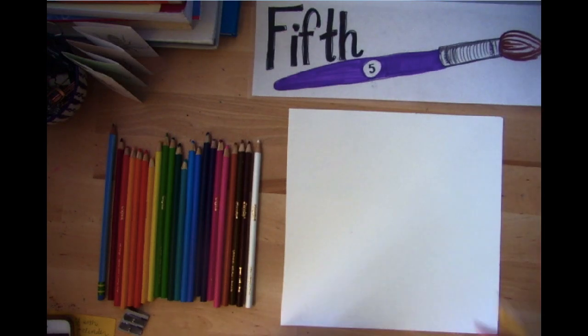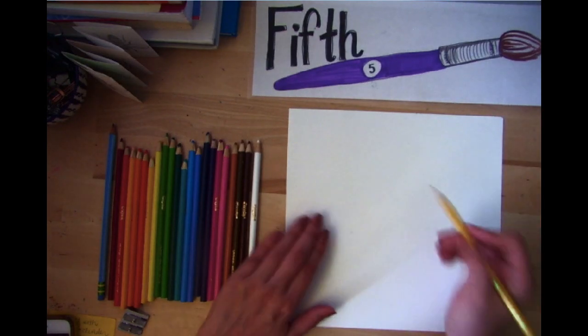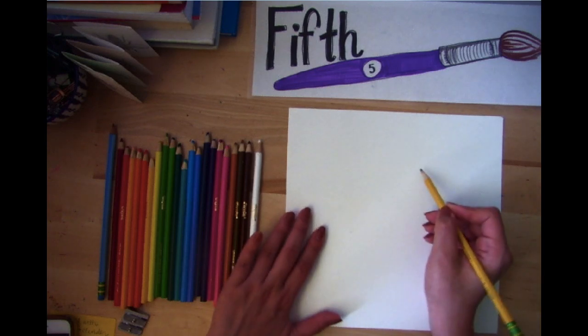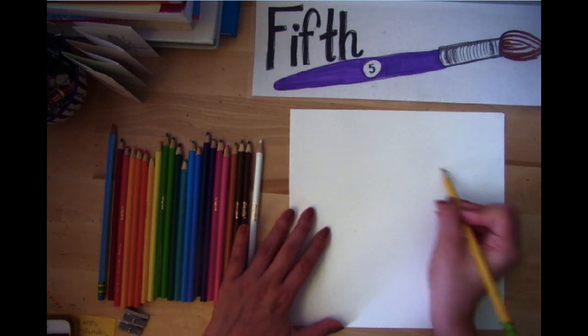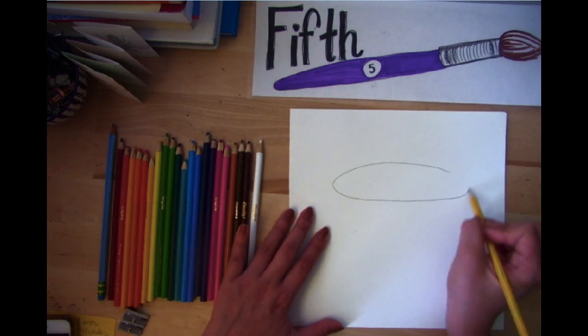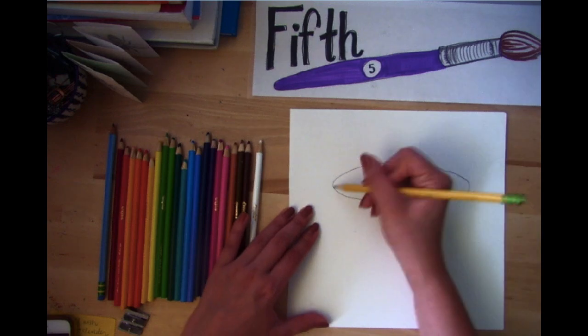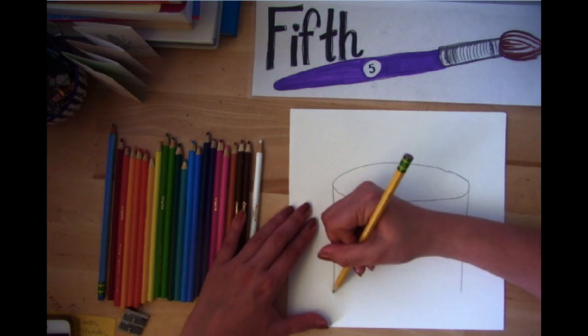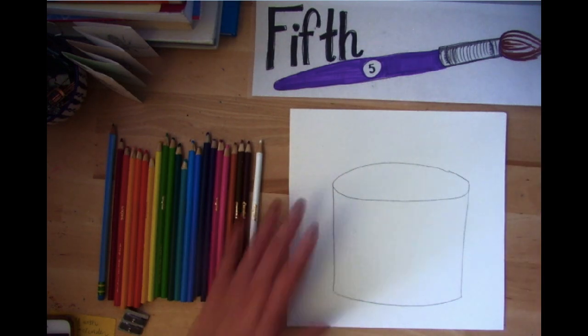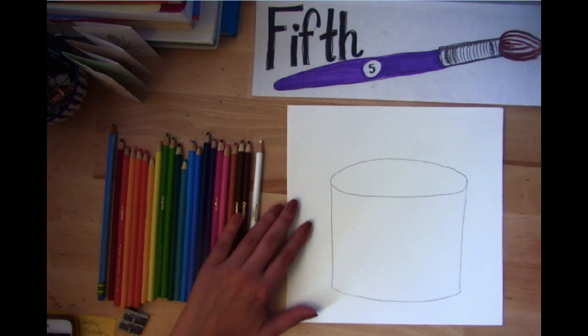So we're going to begin sketching. The first thing we need to do is draw a cylinder close to the top of our page. So I'm just going to draw the beginning portion of our cylinder, which is going to be an oval. Then I want to draw the two sides coming down and then the bottom is a curved line to match my top. So now that I have a nice cylinder going on.